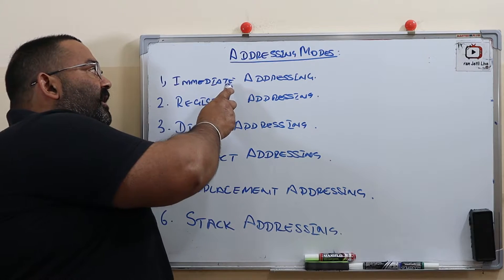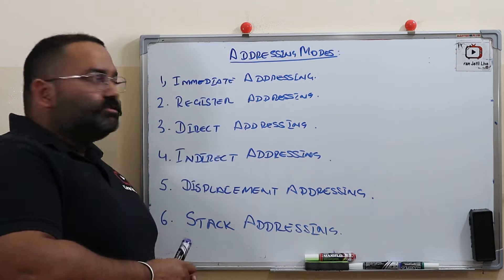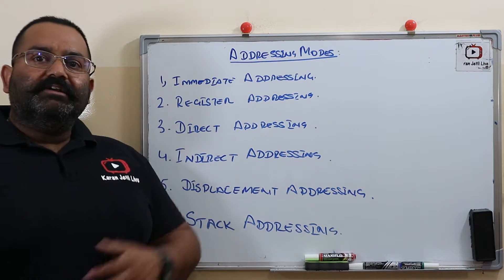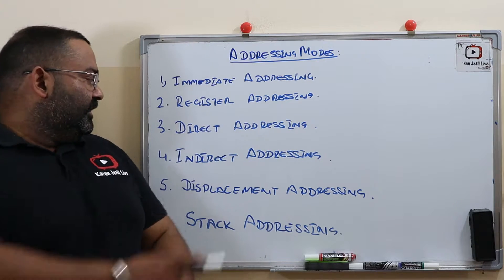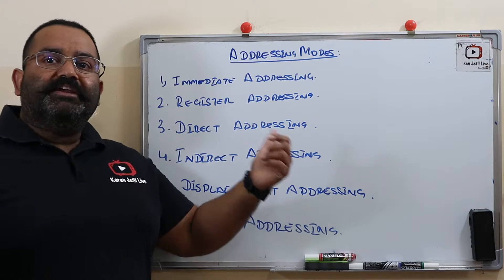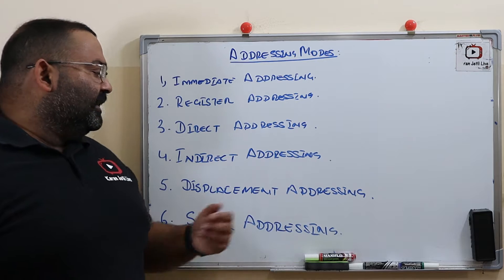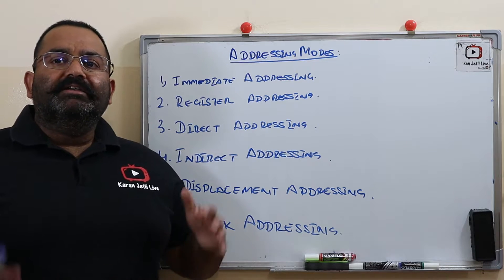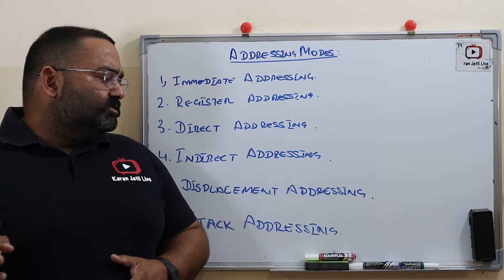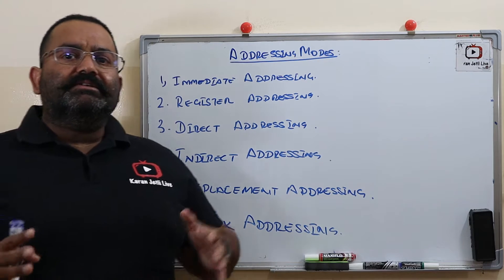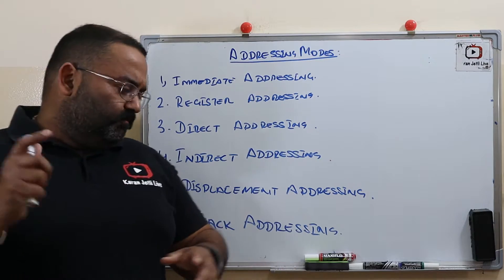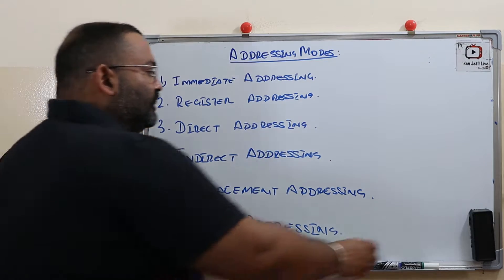When it comes to addressing modes, the Intel 8085 has six types: immediate addressing, register addressing, direct addressing, indirect addressing, displacement addressing, and stack addressing. We will discuss all these types one by one.